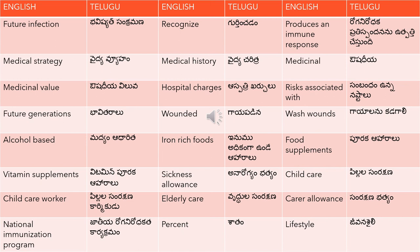Sickness allowance is 'anaarogya bhatyam'. Child care is 'pillala saurakshana'. Child care worker is 'pillala saurakshana karmikudu'. These words are important as they come up in dialogues about sickness allowance, child care allowance, or parent allowance.